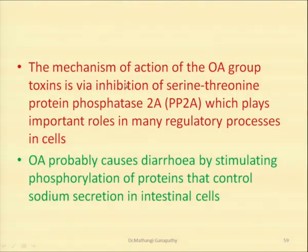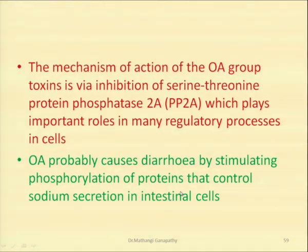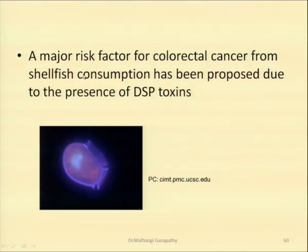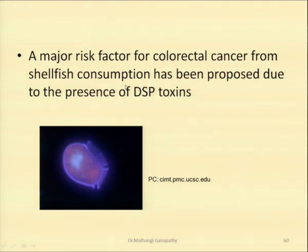The mechanism of action of the okadaic acid group of toxins is via inhibition of serine/threonine protein phosphatase 2A. This serine/threonine protein phosphatase 2A plays a huge role in regulatory processes in the cell. This also causes diarrhea by stimulating the phosphorylation of proteins that control sodium secretion in the intestinal cells. A major risk factor for colorectal cancer from shellfish consumption has been proposed due to the presence of the DSP toxin — so even if you recover from the enteric disease, DSP toxin can accumulate and potentially be a major cause for the formation of colorectal cancer.